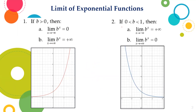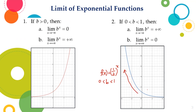On the other hand, if b is greater than 0 but less than 1, then the limit of b raised to x as x approaches negative infinity is equal to positive infinity, and the limit of b raised to x as x approaches positive infinity is equal to 0. From the graph of f(x) = (1/2)^x, where b is greater than 0 but less than 1, as x approaches negative infinity the function approaches positive infinity, while as x approaches positive infinity the limit approaches 0.